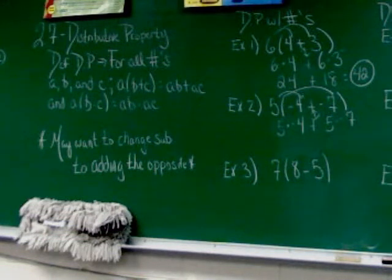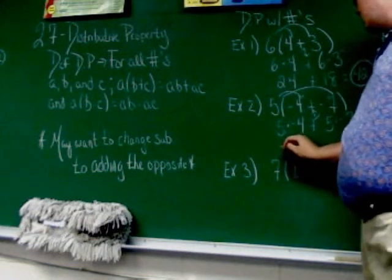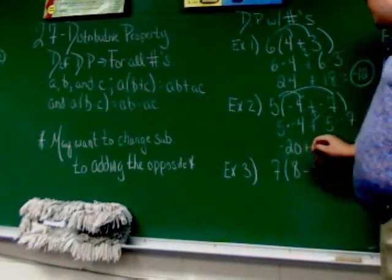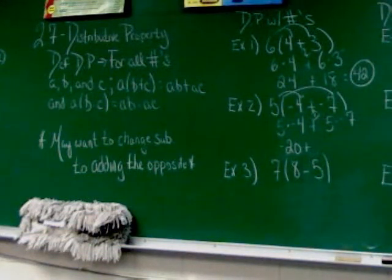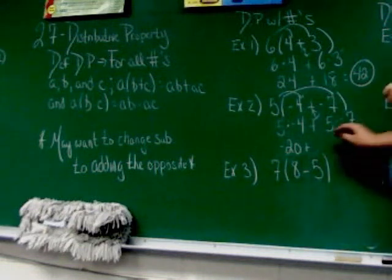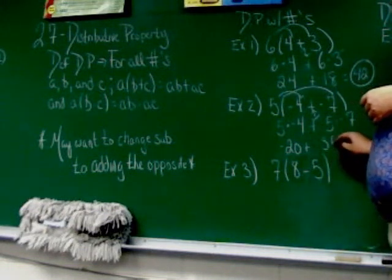Now, you just multiply. 5 times negative 4 would give me negative 20. And, again, 5 times negative 7 would give me negative 35, and we just add those two together, negative 55.